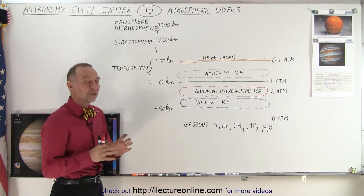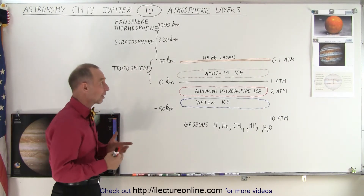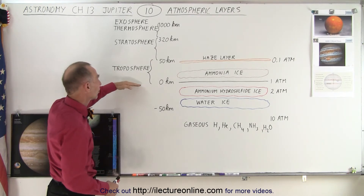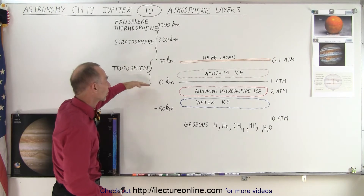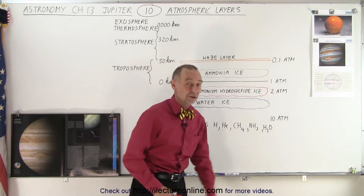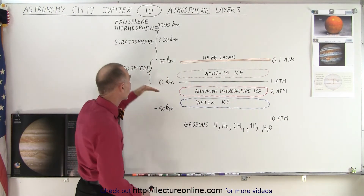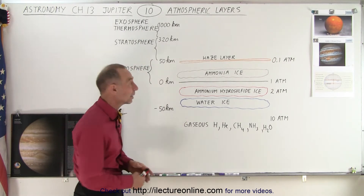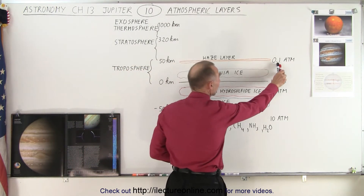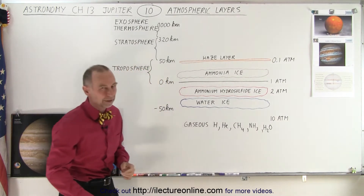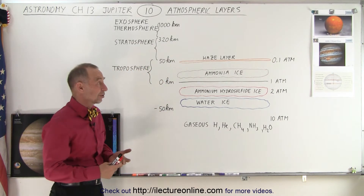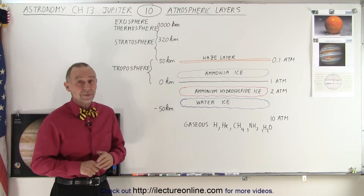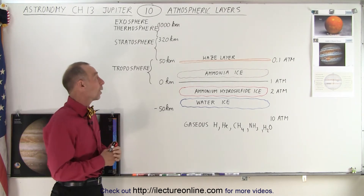We have several layers in the atmosphere, just like on Earth. We have what we call the troposphere, which goes from 0 to 50 kilometers. Zero kilometers being the point where atmospheric pressure is one atmosphere. By the time we reach 50 kilometers — about 30 miles — the pressure has dropped to about a tenth of an atmosphere, and at that point we can say we're no longer in the planet.